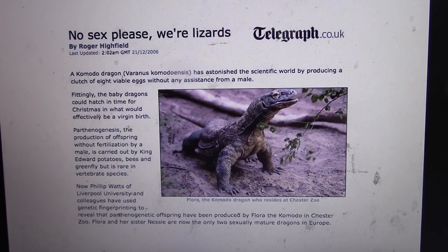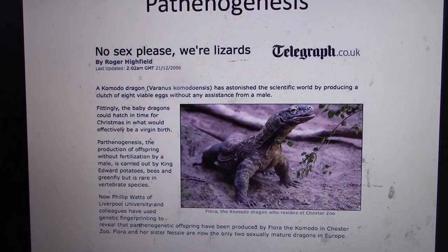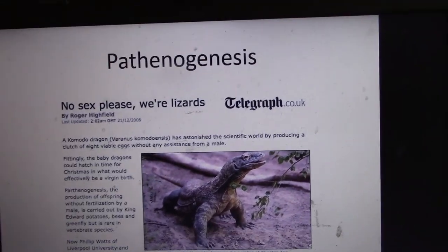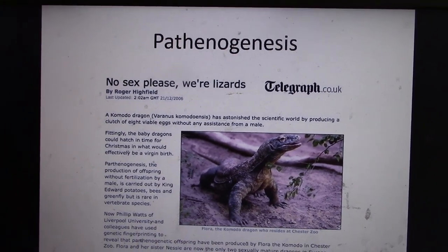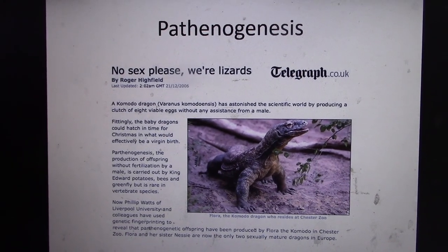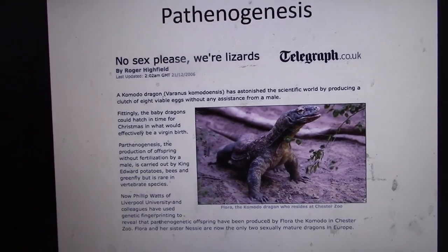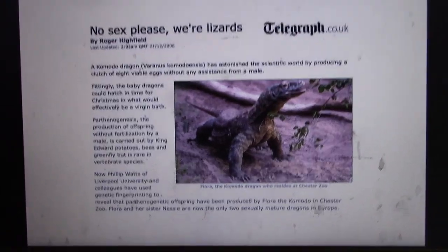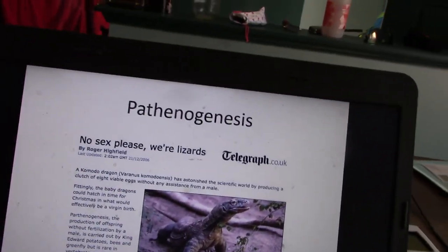If you remember the first Jurassic Park from 1993, the raptors reproduce. They're all females and they reproduce through parthenogenesis because they had amphibian gene spliced into their genome to fill some of those genetic patterns. And there are some unintended consequences. That is obviously a very Hollywoodized version of this type of science, but that's the general idea.